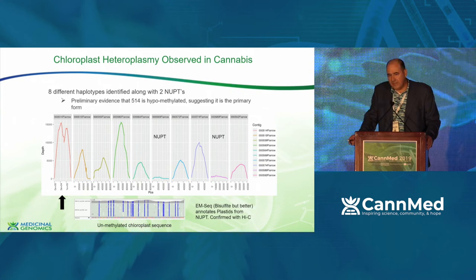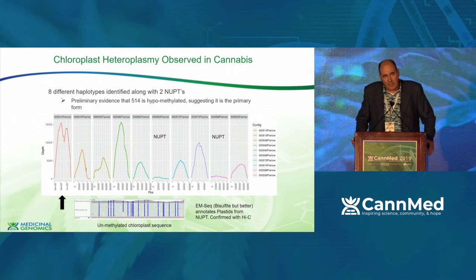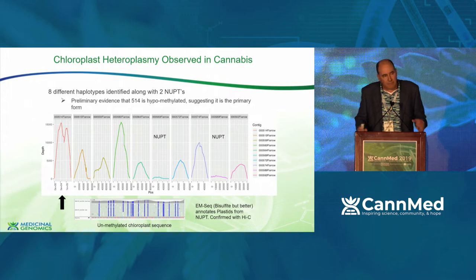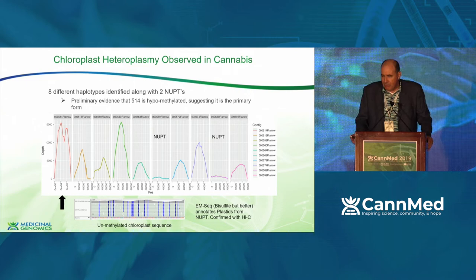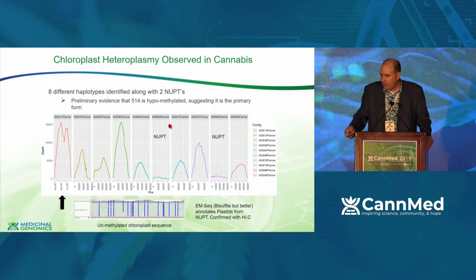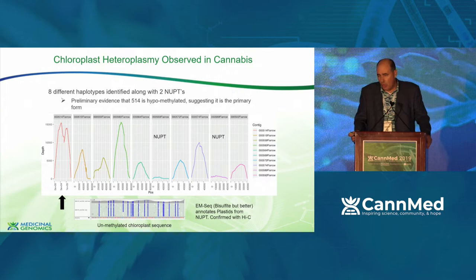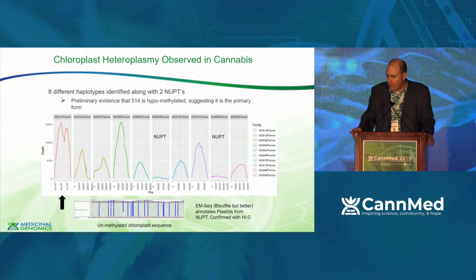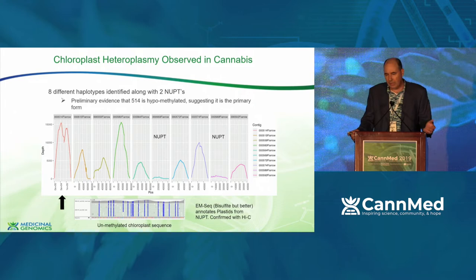If you want to study the terpene synthase genes, you really have to look at the chloroplast genomes, because half of the pathway is inside the plastid genome. With Pacific Biosciences sequencing you need very high coverage and long reads to do this. What we're seeing looks like 10 different chloroplast genomes in the plant — we were expecting to find one. Two of these we can rule out as nuclear genomes, known as NUPTs — there's a lot of transfer of DNA from chloroplasts to autosomes, and the ones in the autosomes are usually silenced with methylation.